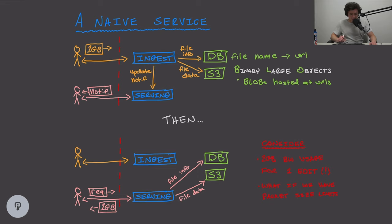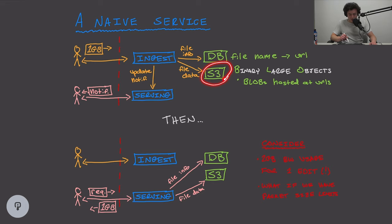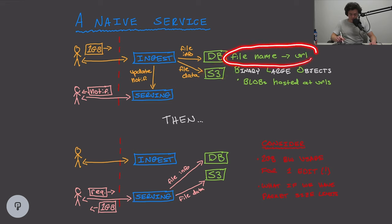Binary large objects — also known as blobs — are hosted at a URL that S3 provides. I can upload a file to S3 and then download it from a URL like s3.com/my-file-name. Now that the file is stored in S3, we need to record that it's there. We'll have a separate database storing file information — metadata like the file name and the file's URL — with a mapping between the file name, URL, and the user.